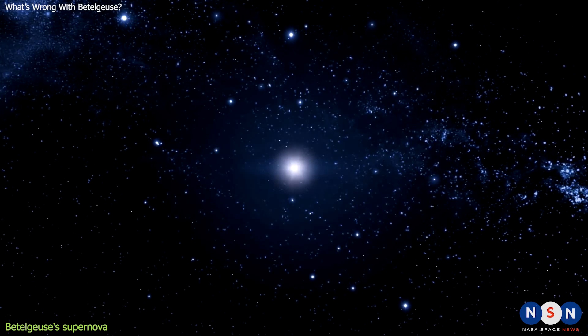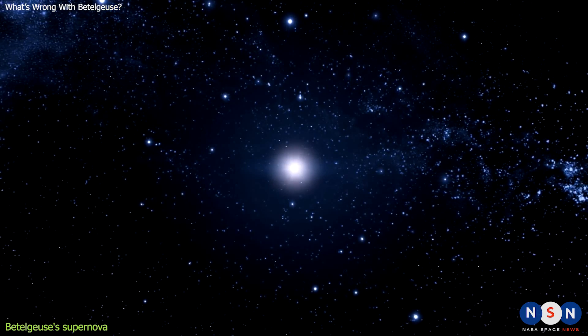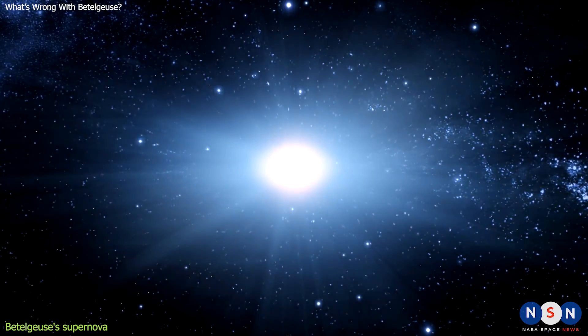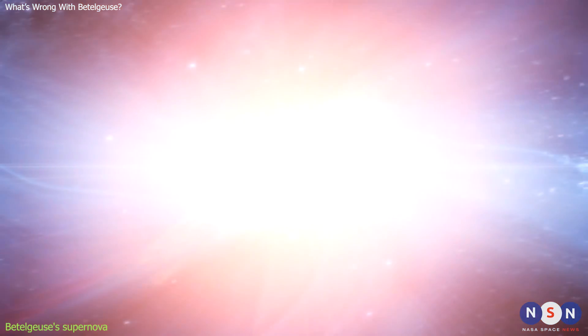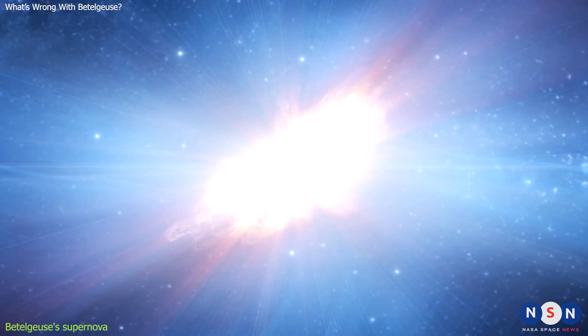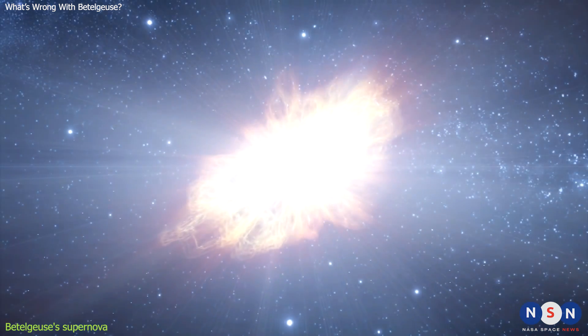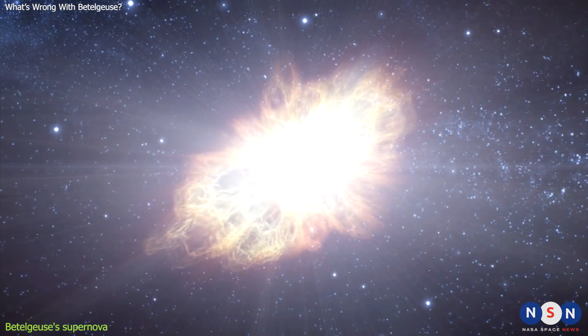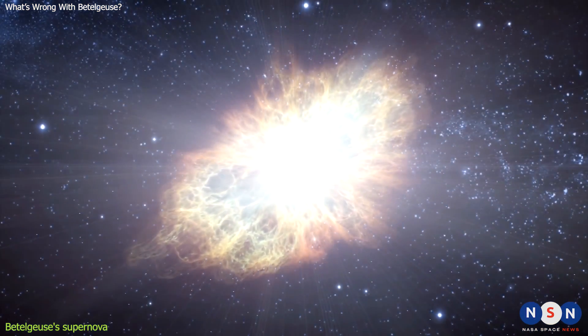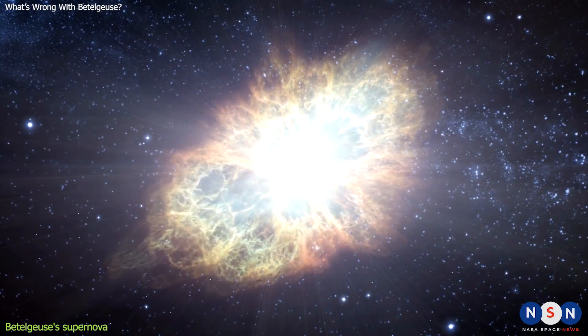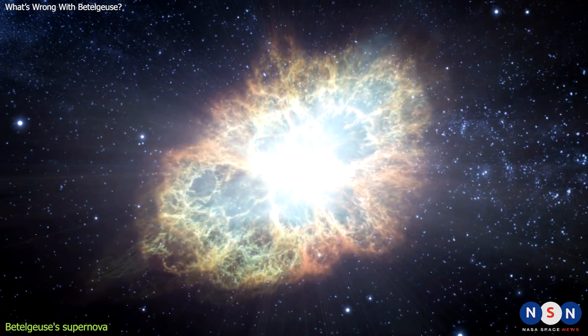However, if Betelgeuse did go supernova, it would be an amazing sight to behold. Betelgeuse is one of the closest stars to Earth that can go supernova, and it would be one of the brightest events in history. It would be visible in broad daylight and outshine the full moon at night. It would last for weeks or months, gradually fading away. It would also produce a spectacular nebula of gas and dust that would glow for thousands of years.